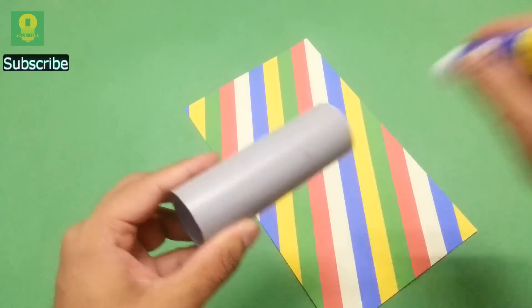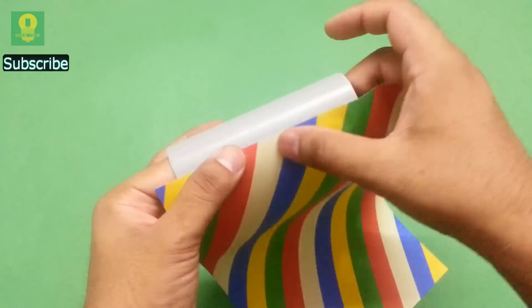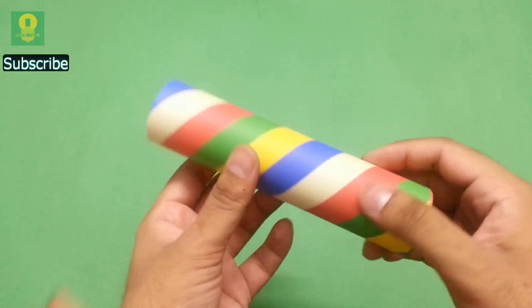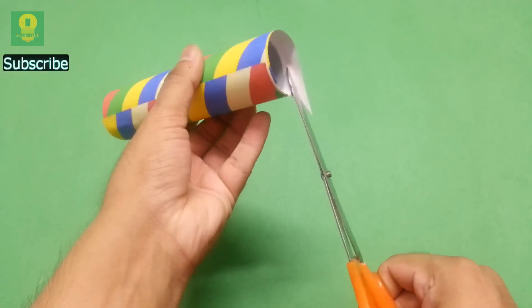Using glue, paste the design on the PVC pipe. Cut the extra sheet from both the sides using scissors.